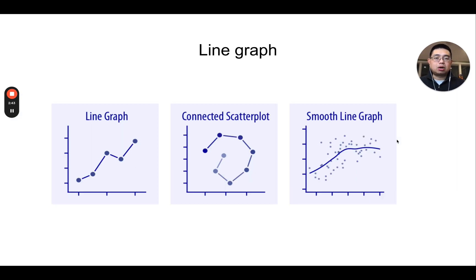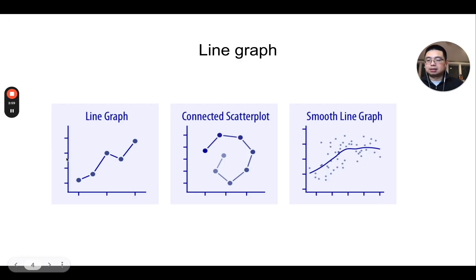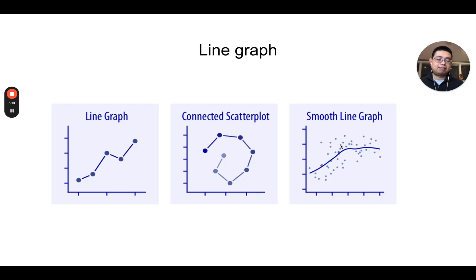The third type is called a line plot or line graph. You can use a line graph to show trends, for example across different time points — time point one, two, three, four, five — with the y-axis showing different amounts. You can also use a smoothed line graph, which just adds a smooth line to a scatter plot. A connected scatter plot is essentially scatter plot dots connected by lines.